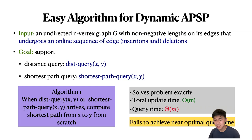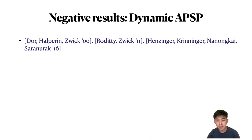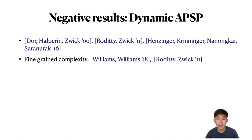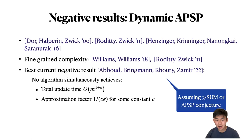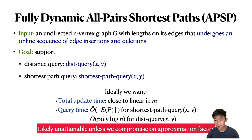So the question is: can we maintain some additional data structure where we achieve much faster query time and still get near optimal total update time? There's a long line of work giving negative results for dynamic APSP. There are also works showing that fast algorithms for dynamic APSP would lead to breakthrough results in fine-grained complexity. The best current negative result is given by Abboud et al. in 2022, where they show no algorithm can simultaneously achieve total update time O(m^{1+epsilon}) and approximation factor 1/(c*epsilon) for some constant c, under the 3SUM or APSP conjecture.